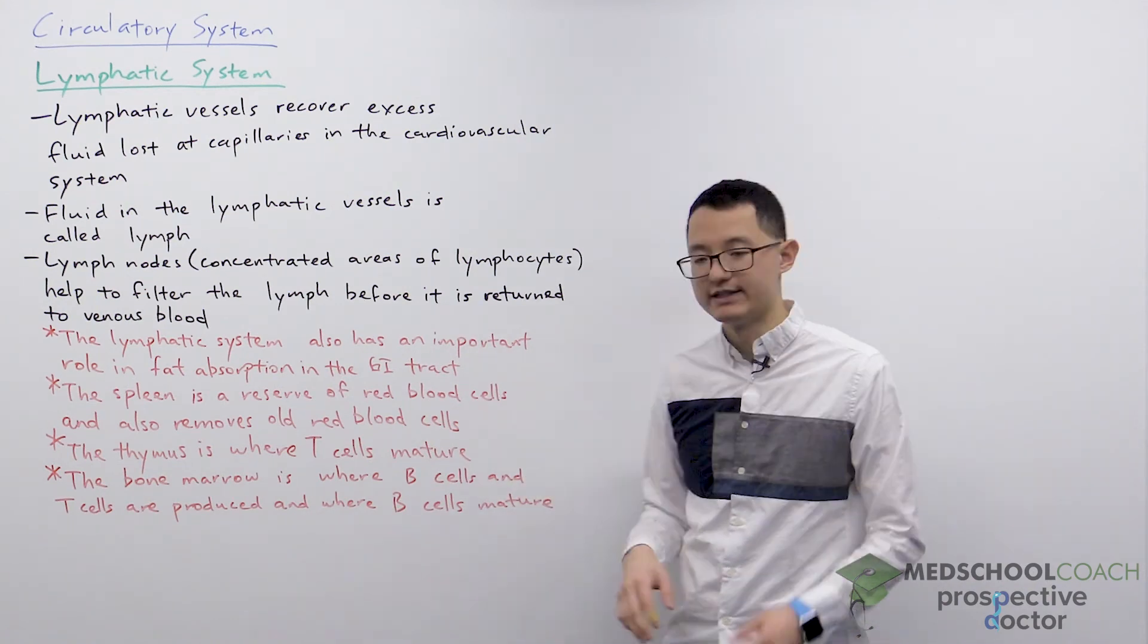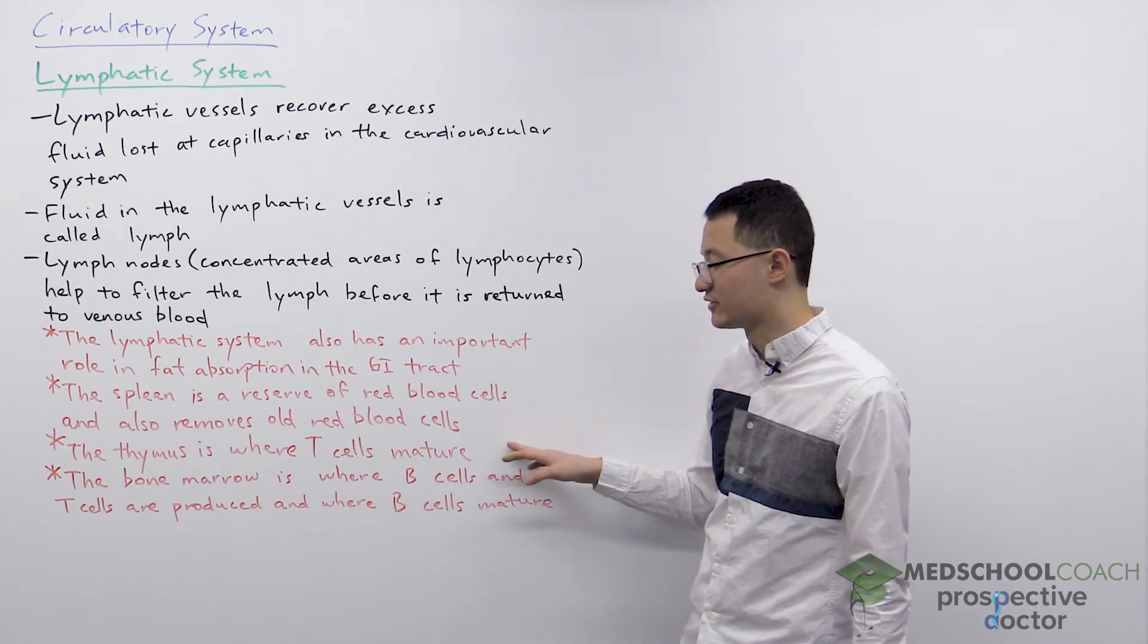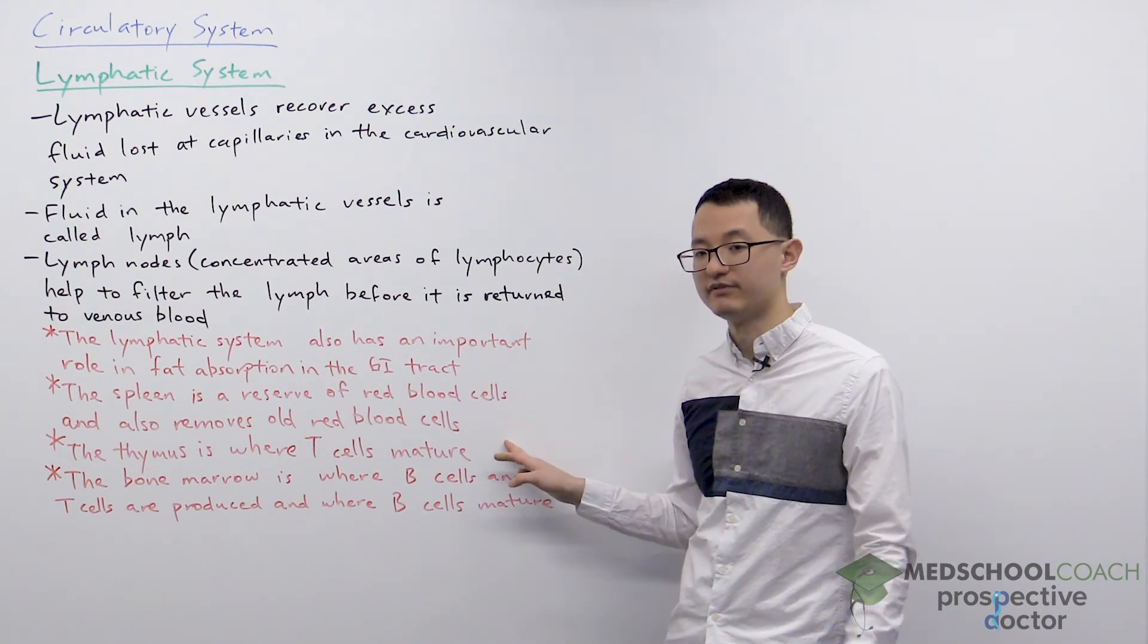The thymus is the location where T cells mature, and T cells are an important component of the adaptive immune system.